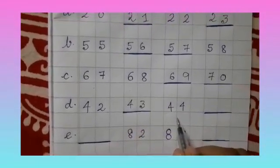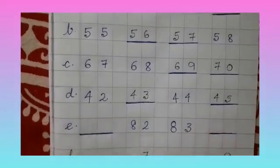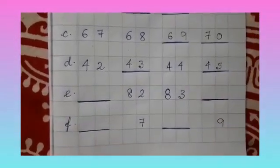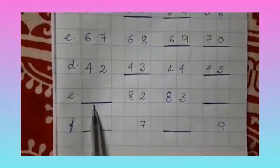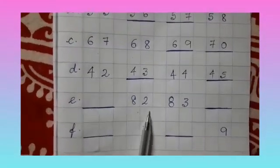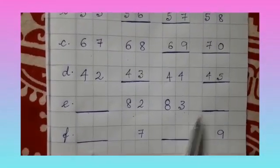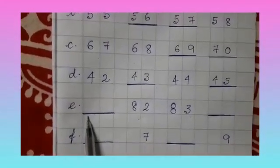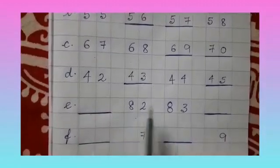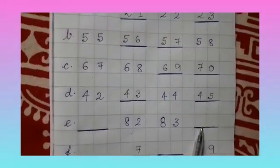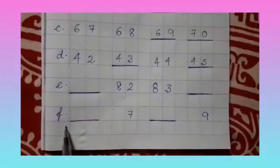In next two, e and f, see I am not doing these two because this is going to be your homework. Here there is a dash, then 82, 83, and another dash. So you have to count from 80 and tell me the answer. It will be 80, 81, 82, 83, then 84. You have to write it on your own.